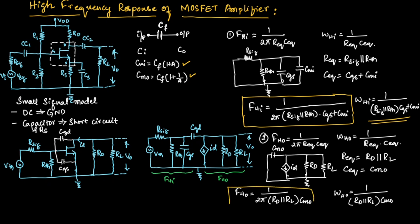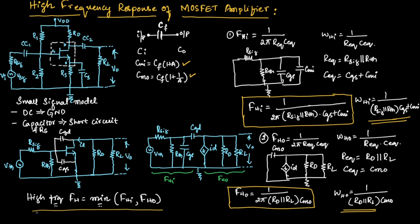These are the formulas for frequency and angular frequency at the output side. The overall high frequency Fh is equal to the minimum frequency between FHI and FH naught. This is about the high frequency response of MOSFET amplifier. Hope you have understood the topic. Thank you.